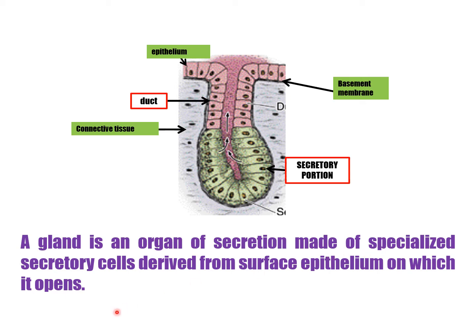A gland is an organ of secretion made of specialized secretory cells derived from surface epithelium on which it opens. The epithelium rests on a basement membrane, with cells forming tight junctions on top. The type of cells on the basement membrane determines what name is given to the epithelium.